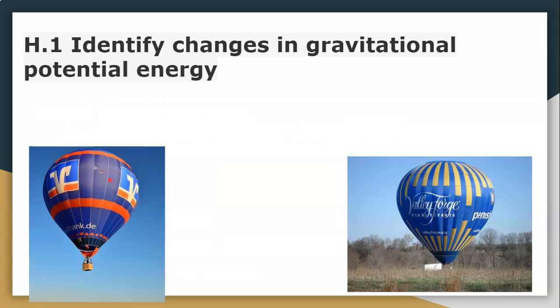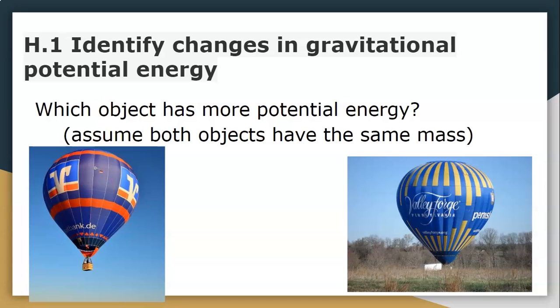And last but not least, we have two air balloons. Once again, assume the air balloons have the same mass. So, in this example, this hot air balloon is in the air. This hot air balloon is obviously on the ground. So, therefore, this hot air balloon would have more potential energy because it is higher above the ground.